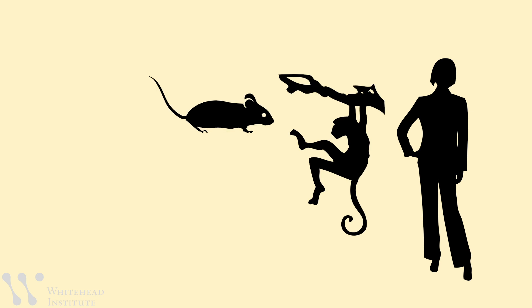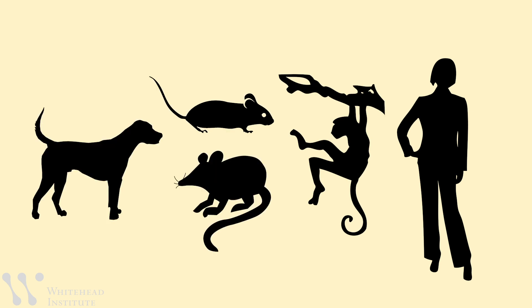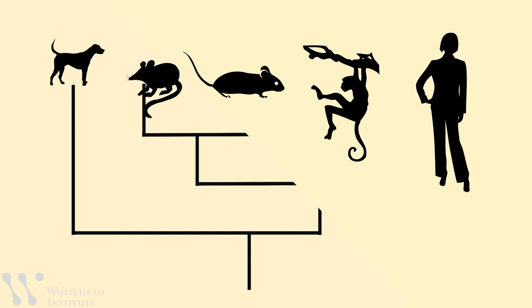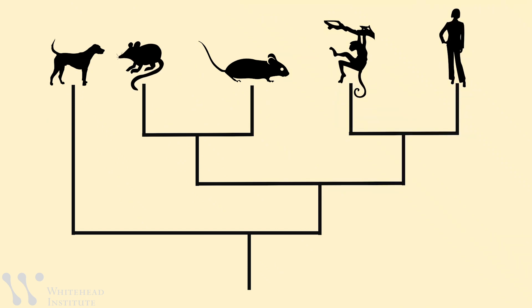Human, monkey, mouse, rat, and dog really span much of the breadth of mammalian evolution. They have a last common ancestor that lived about 80 or 100 million years ago.